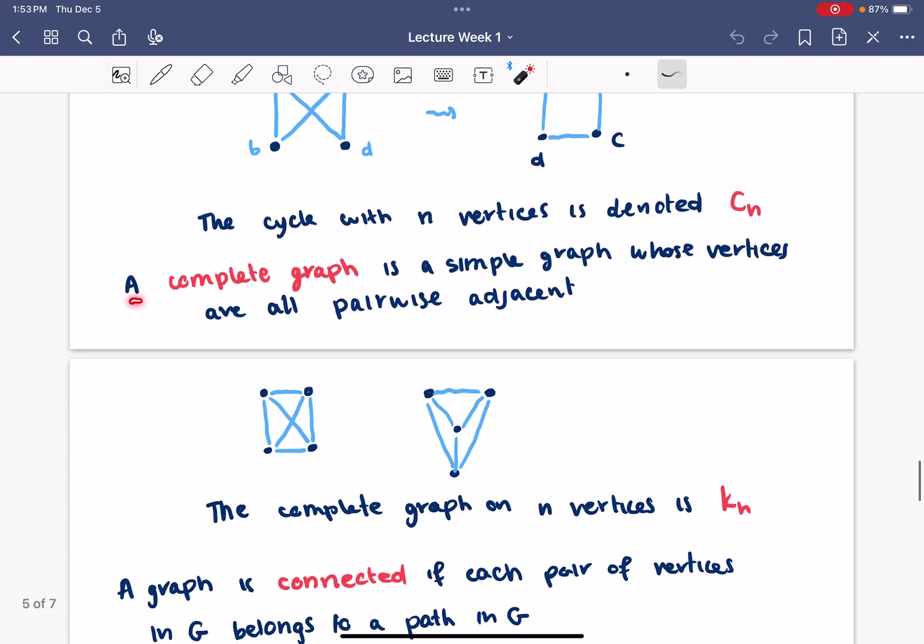The cycle with N vertices is denoted by C_N. Another type of graph, a complete graph, is a simple graph whose vertices are all pairwise adjacent. Here we have a picture. We have four vertices and every pair of them is adjacent. So, that's called a complete graph. Here's just another depiction of the complete graph on four vertices. This thing is denoted K sub N.